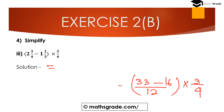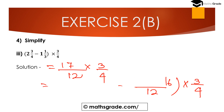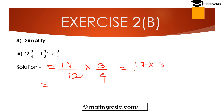So 33 minus 16 is 17, giving 17/12, multiplied by 3/4. Now product of numerators divided by product of denominators. Cancel 3 in numerator with 3 in denominator 12, giving 4 in denominator.